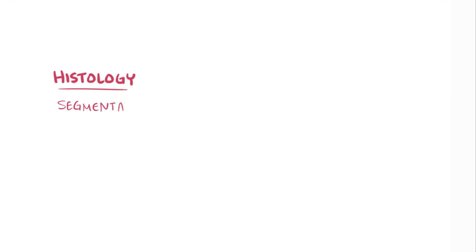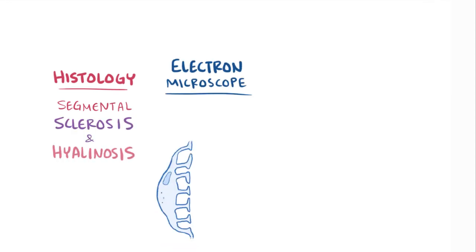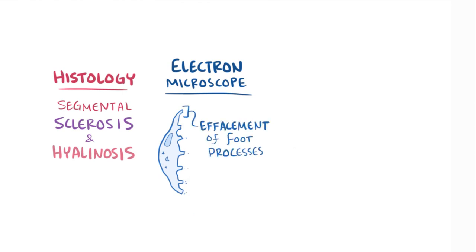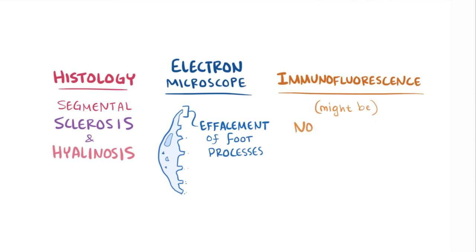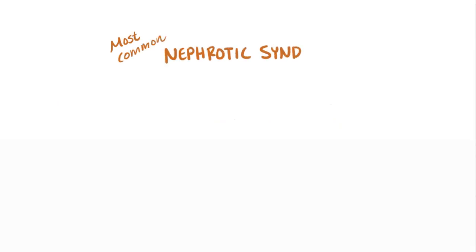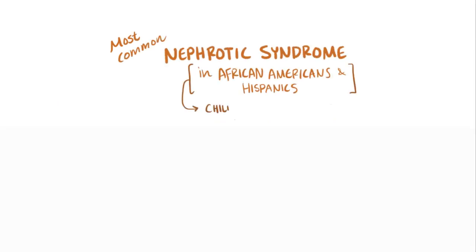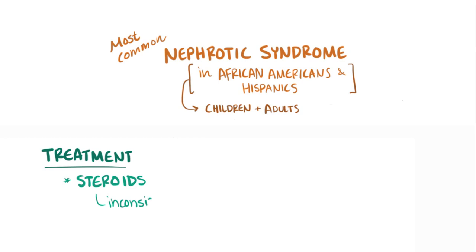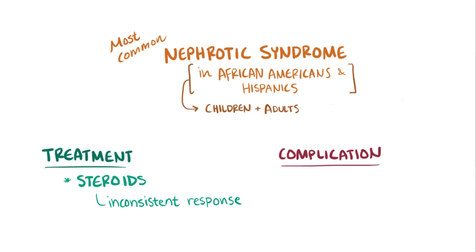On histology, there will be segmental sclerosis and hyalinosis of the glomeruli, and under electron microscope, there is effacement of the foot processes of the podocytes. On immunofluorescence, there might be nonspecific focal deposits of IgM and complement proteins, which get trapped in areas of hyalinosis, but these aren't always seen. FSGS is the most common cause of nephrotic syndrome in African Americans and Hispanics, and can affect both children and adults. FSGS is usually treated with steroids, although it has an inconsistent response, and for that reason, especially in adults, FSGS can involve more and more segments of the kidney's glomeruli, to the point where it causes chronic renal failure.